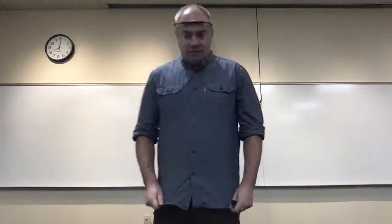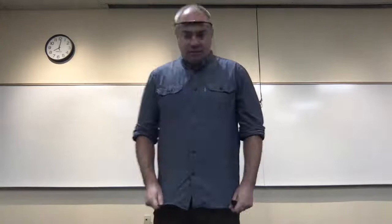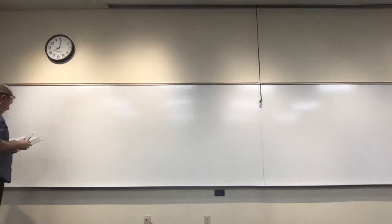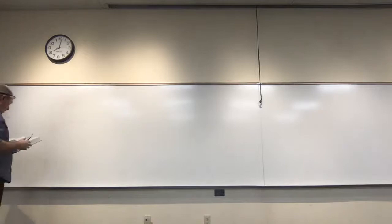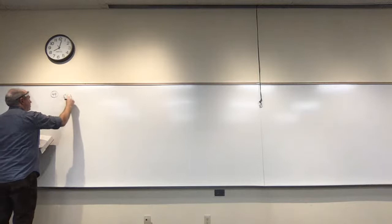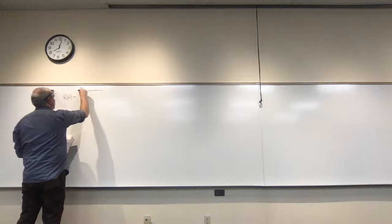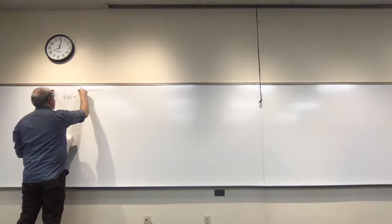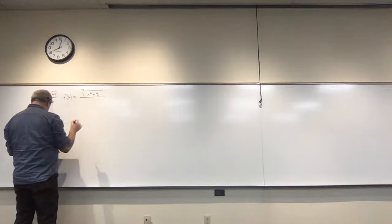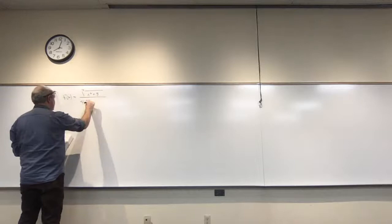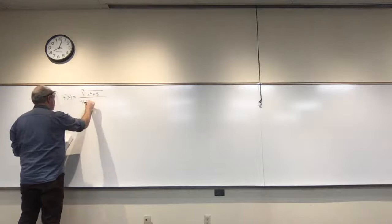Sure, let's go over 49. So this is asking us to determine the horizontal asymptotes. We have f(x) equal to the cube root of x to the sixth plus 8, divided by 4x squared plus the square root of 3x to the fourth plus one.